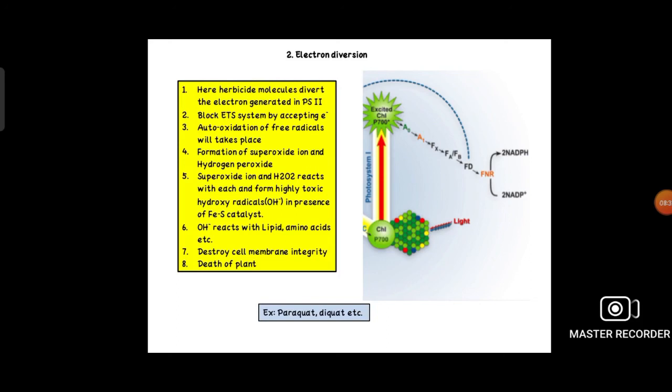This is how electron diverters act in the plant. But in resistant plants, just as I took the example of Thanos as superoxide ion, to destroy Thanos there were Avengers. Here also, there are some Avengers in resistant plants called scavengers or oxygen scavengers. They will neutralize this oxygen. For example, superoxide dismutase, peroxidase, and glutathione reductase will reduce this oxygen, and as a result, the plant will be safe.